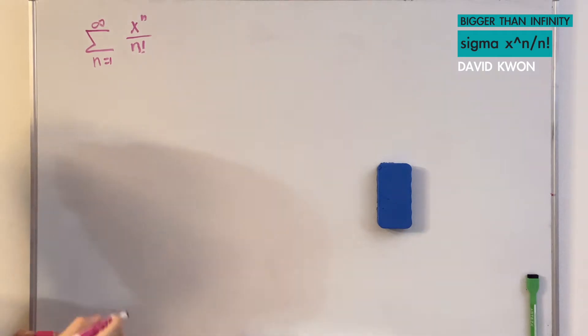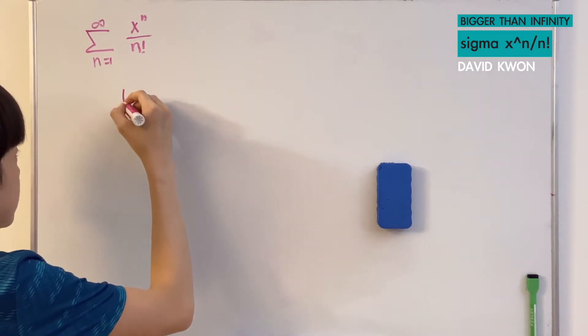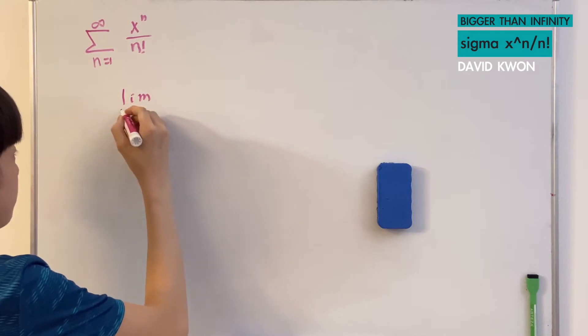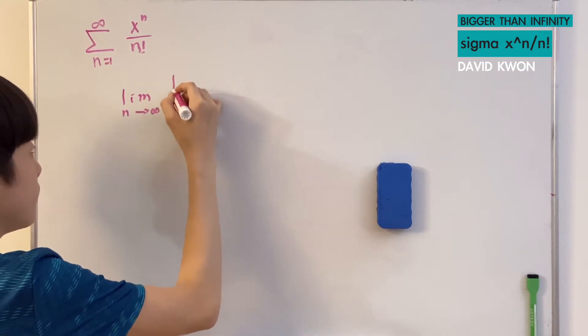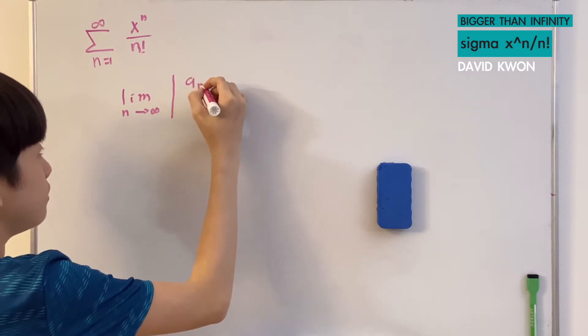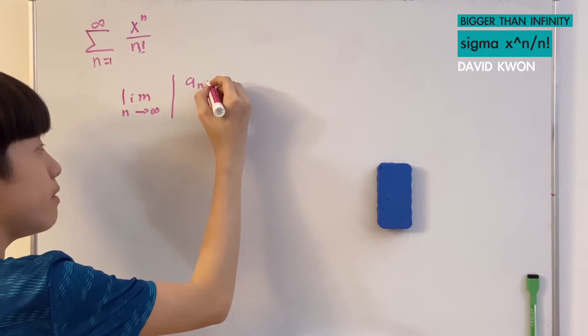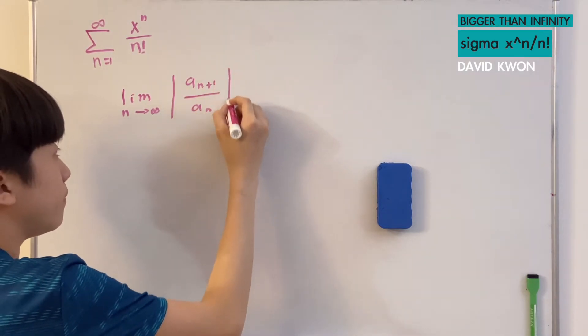To do this we need to use the ratio test. The ratio test is basically saying the limit as n approaches infinity of the absolute value of a sub n+1 over a sub n.